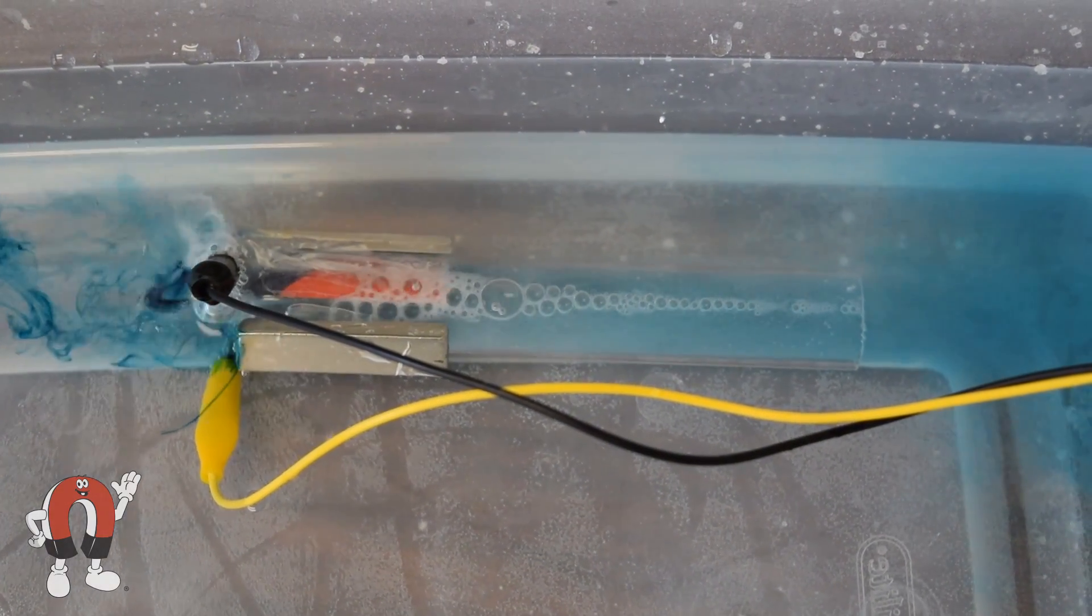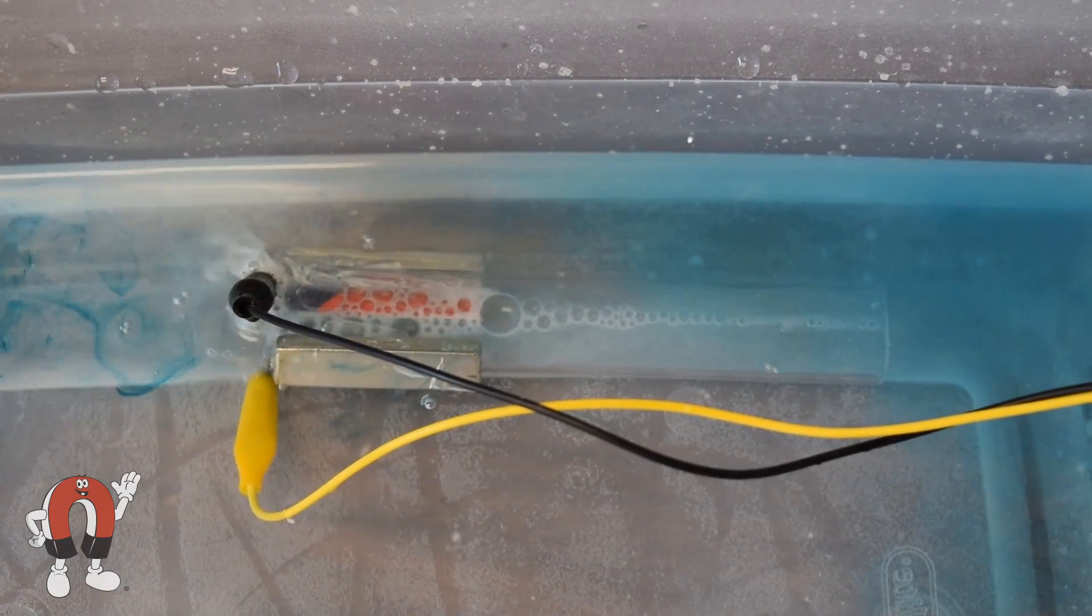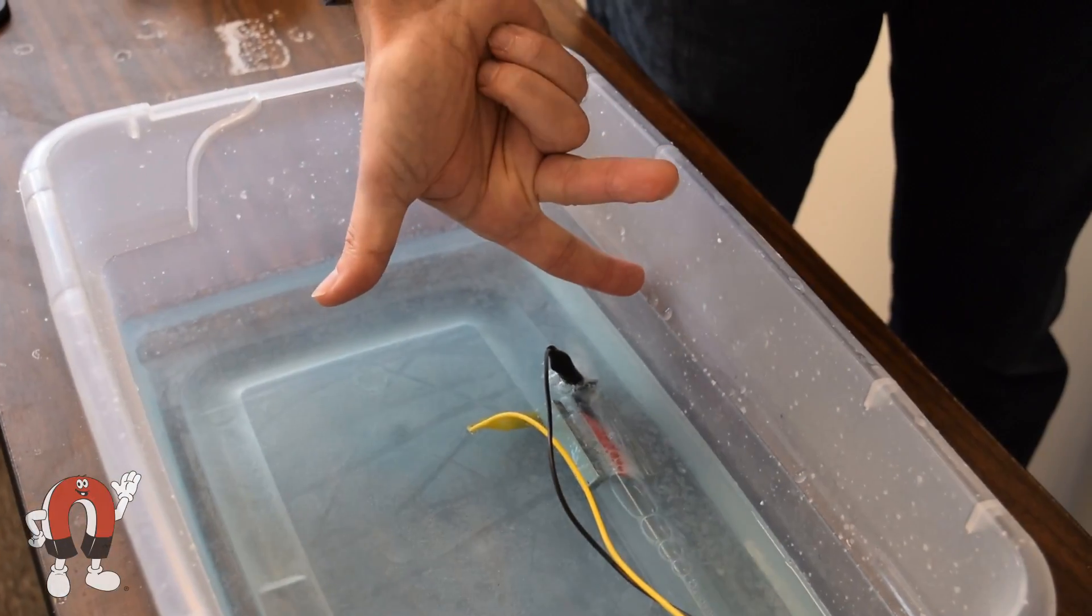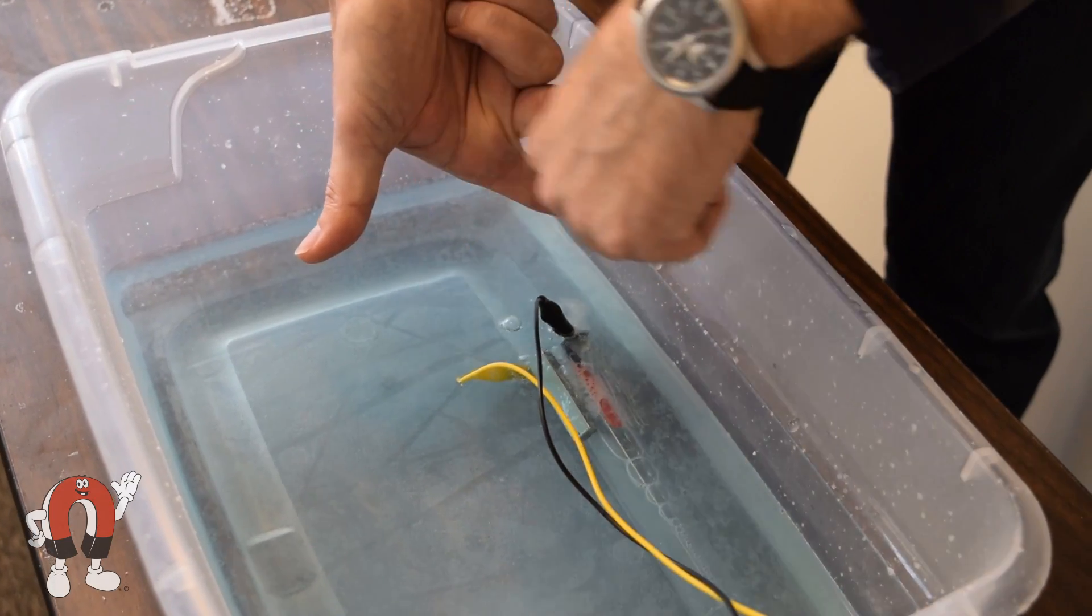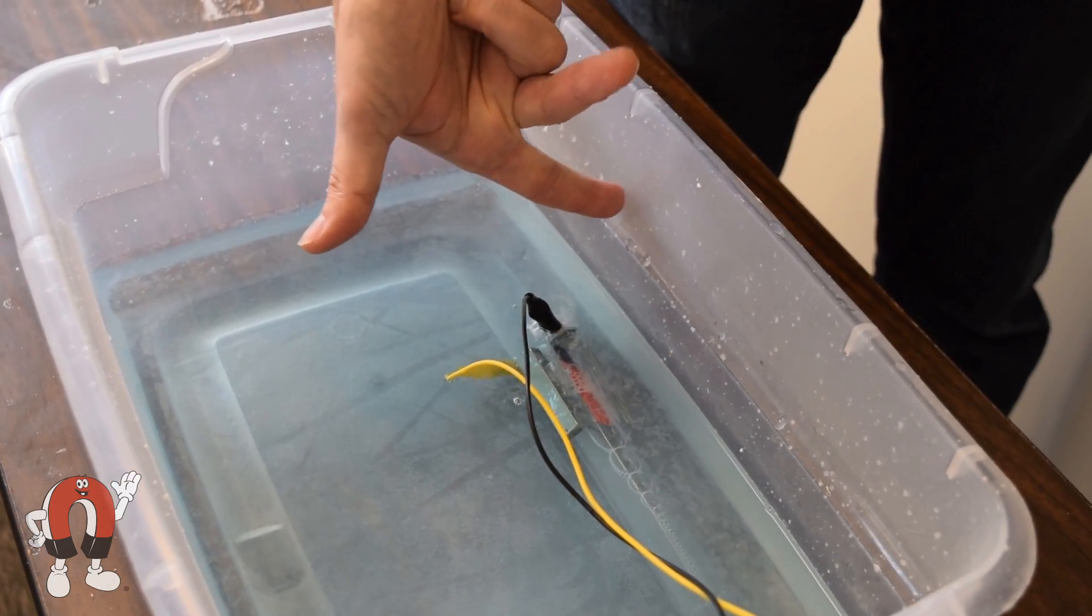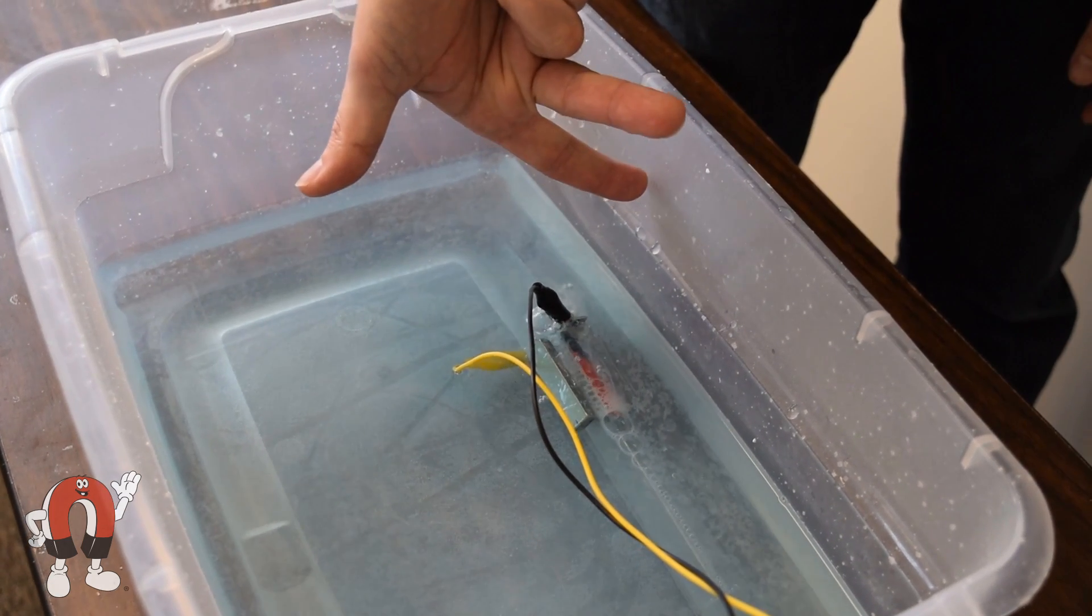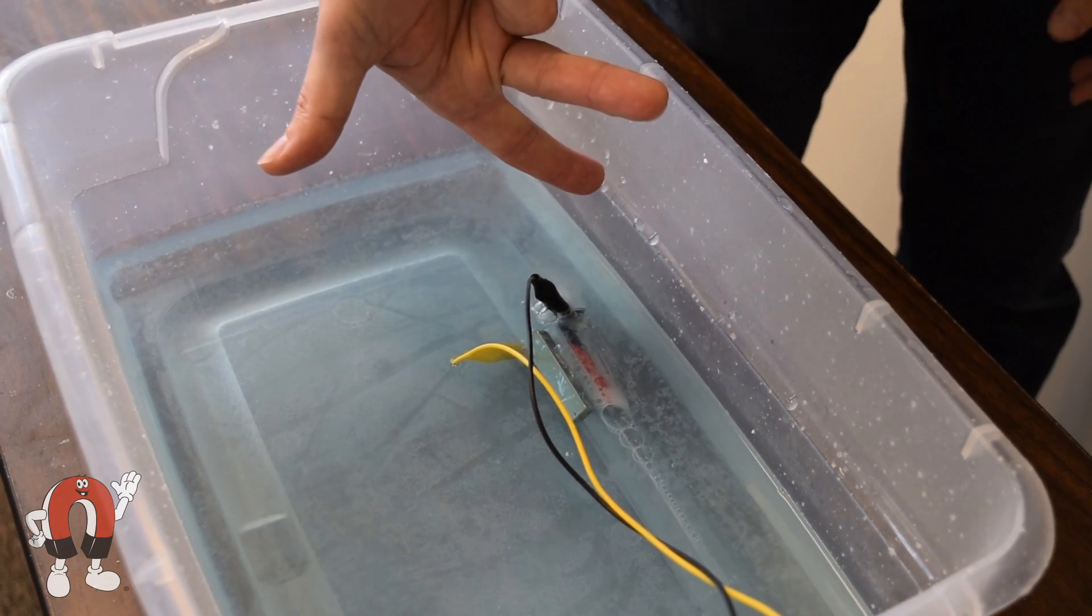A drop of food coloring helps show the speed of the water flowing through the clear tube. Because the current is that way, the magnetic field is that way, so the force is through the tube. All at 90 degrees from one another.